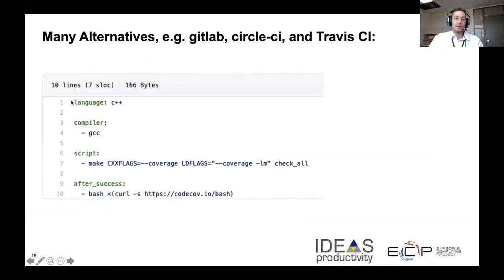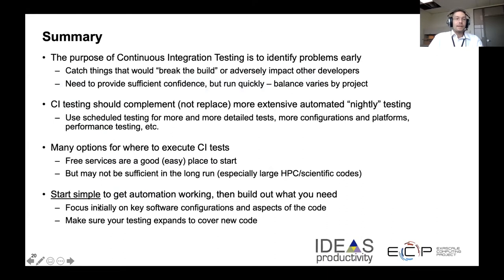This is the corresponding file for running our hello world numerical test from Travis, just to show that if you use Travis it's not all that different — you just have to enter the tags a little bit differently because Travis understands its YAML files differently than GitHub does. To summarize: CI is to identify problems early, especially things that would break the build and syntax errors that you don't want your users to see and don't want to sit inside of your repository at any point. They need to provide sufficient confidence but run quickly, and that balance varies by project.